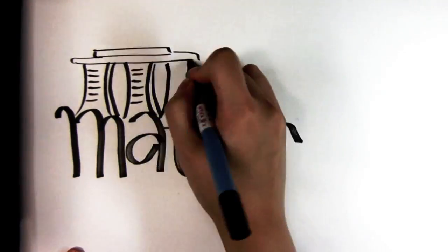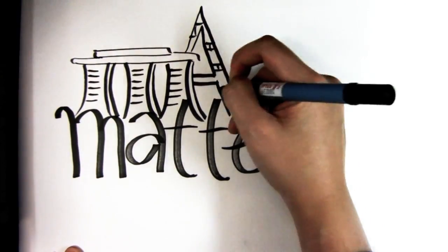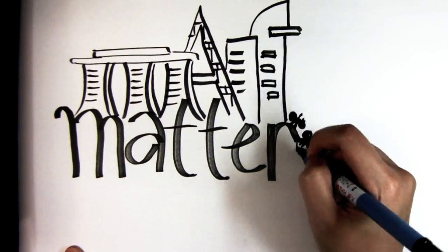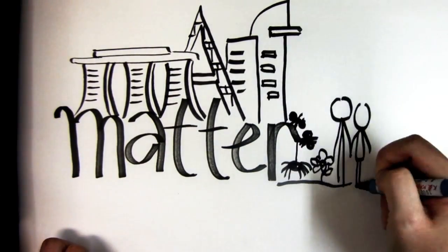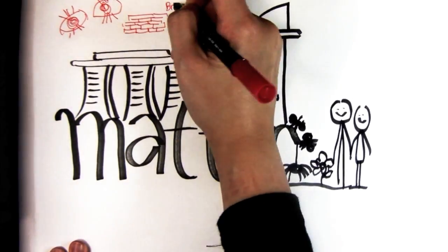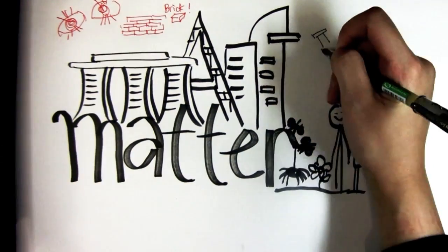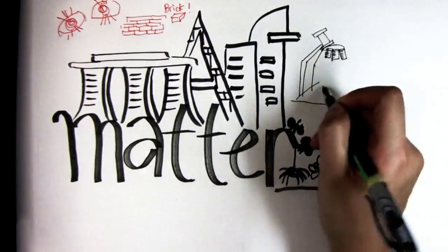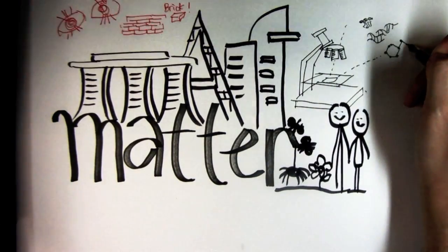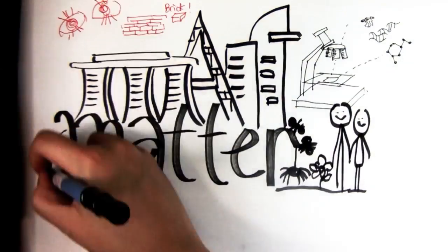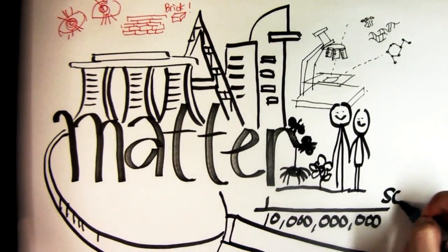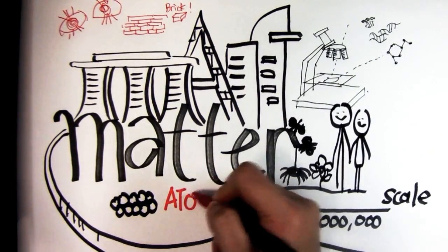Chemistry is the study of matter. Matter is all around us, big and small, such as the buildings you see, to the small insects and even us as people. We know that buildings are made out of bricks, which can be seen with our naked eye. For living things, we are made out of different cells which can be seen under the microscope. If we were to zoom in 10 billion times on all of these, we will find out that it is made out of small particles called atoms.